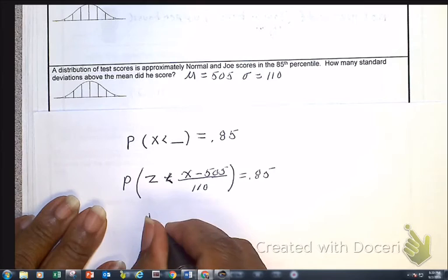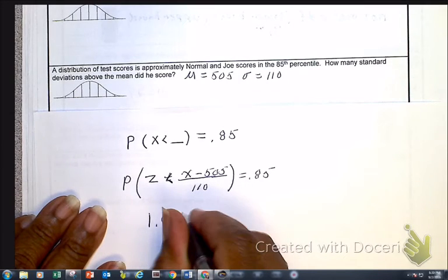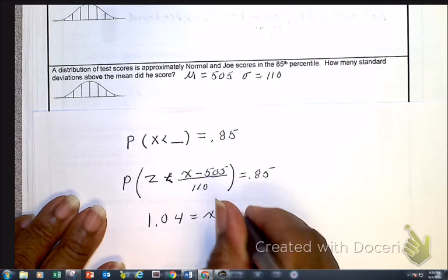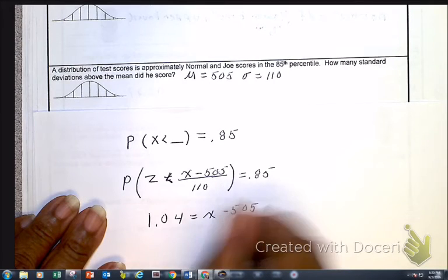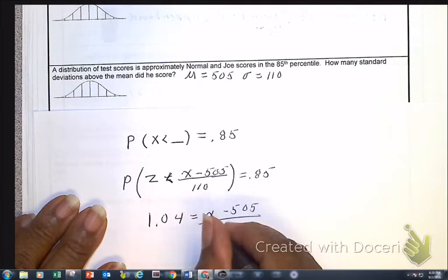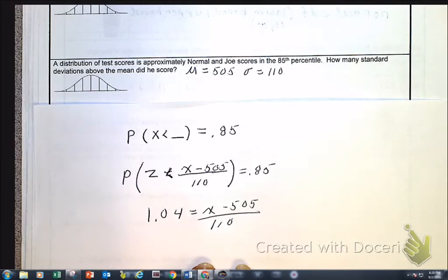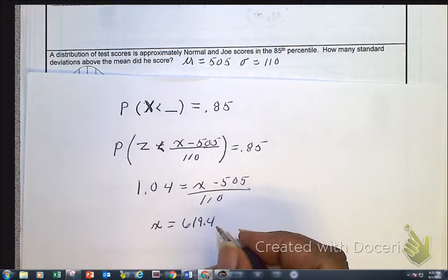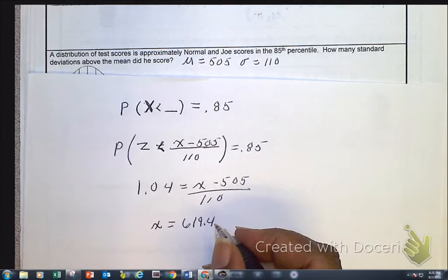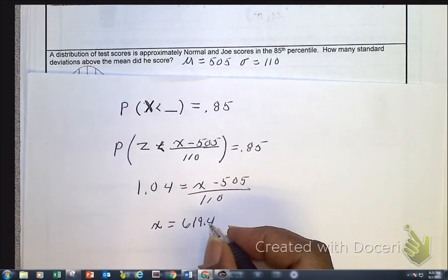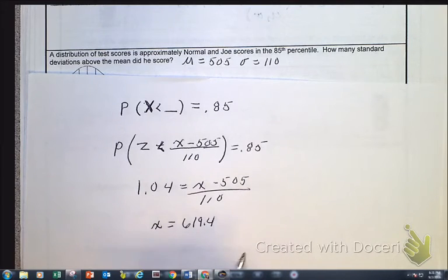It's going to equal x minus 505 over 110. And I know I put equal but I'll do it that way. I'm not dealing with that inequality because I don't have to. So you need to go ahead there and solve for that unknown x. And now you get a score of approximately 619.4. Now this was the hard, the long way of doing this. So let's do it the easy way, but I need you to see how to do it both ways with or without the calculator.